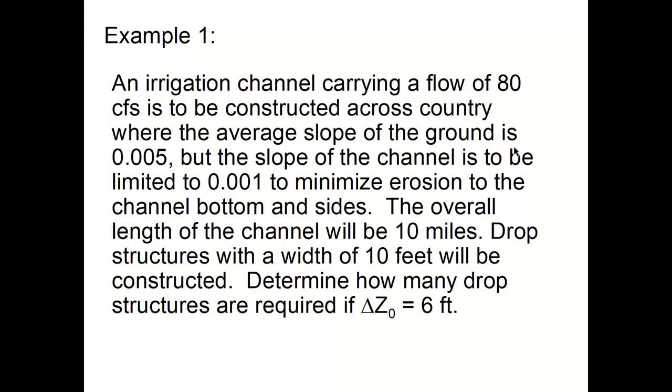Our first example for the hydraulic design of a drop structure. An irrigation channel carrying a flow of 80 cubic feet per second is to be constructed across country where the average slope of the ground is 0.005, but the slope of the channel is to be limited to 0.001 to minimize erosion to the channel bottom and sides. The overall length of the channel will be 10 miles. Drop structures with a width of 10 feet will be constructed. Determine how many drop structures are required if the vertical drop delta Z₀ equals 6 feet.